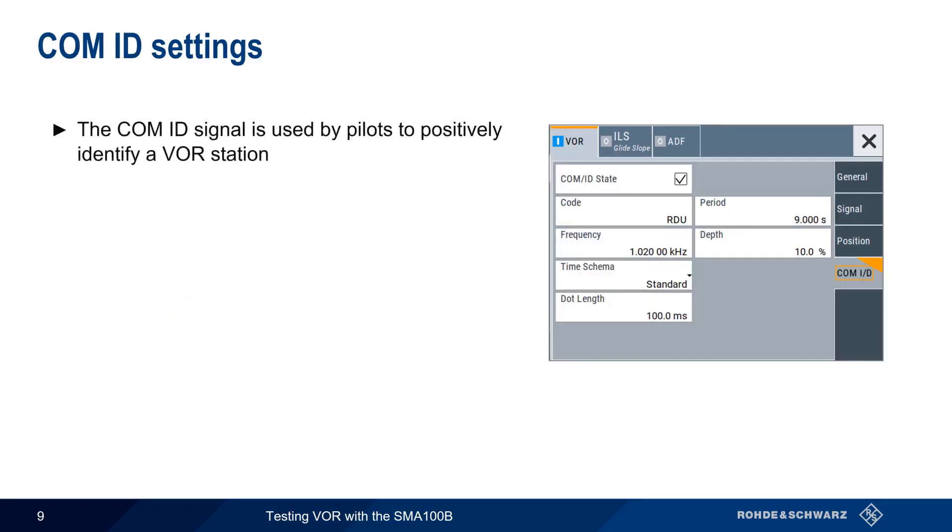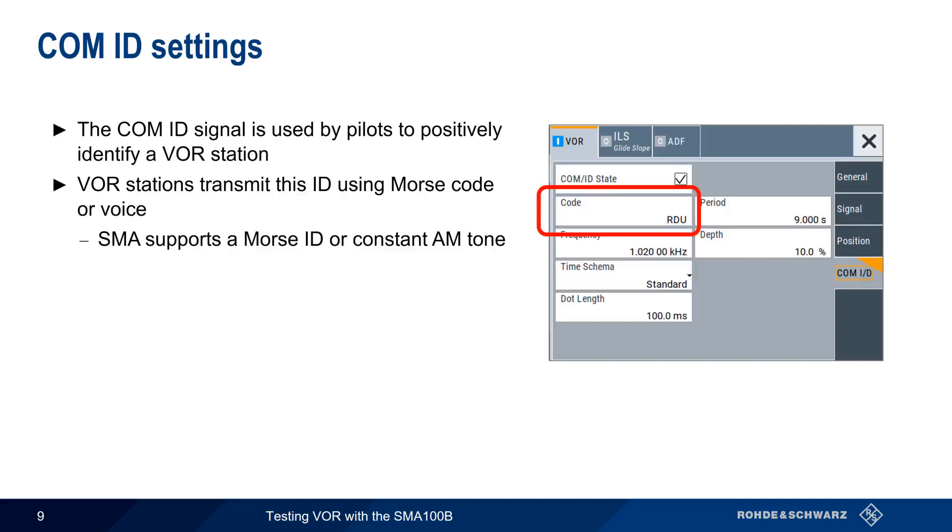The COMID signal is used by pilots to ensure that they're tuned to the proper VOR station. VOR stations transmit this ID signal either as Morse code or as a recorded voice message. If COMID is enabled, the SMA will generate the defined code in Morse, or a constant AM tone if this field is left blank.